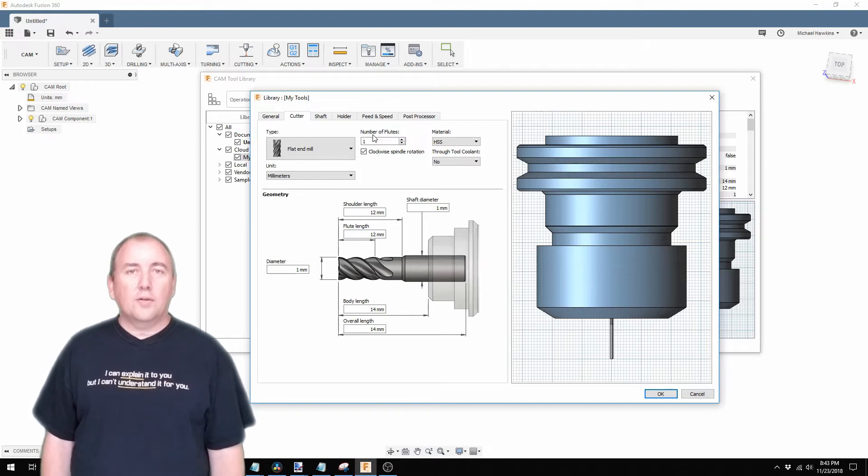I selected the tool type of flat end mill and entered a diameter of 1mm and a body length of 14mm. This was good enough for my needs.